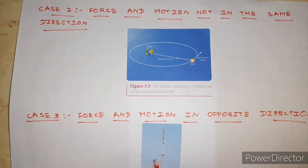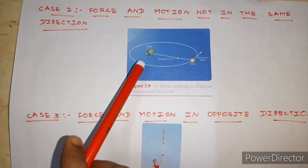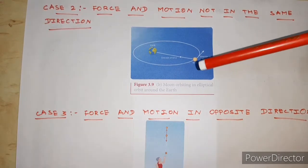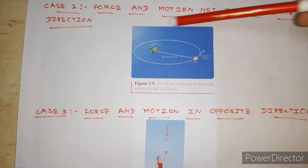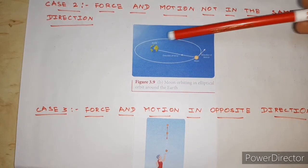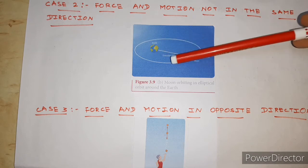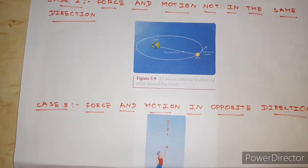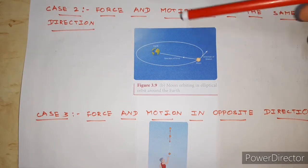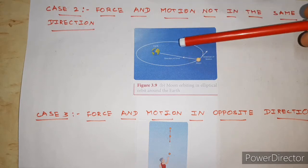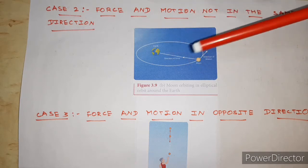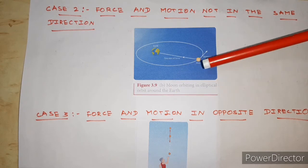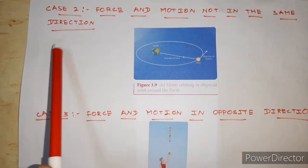In case 2, force and motion are not in the same direction. For example, the moon revolves around the Earth in an elliptical orbit. The direction of the gravitational force toward the Earth and the direction of motion of the moon are not the same — this is the moon orbiting in an elliptical orbit around the Earth.